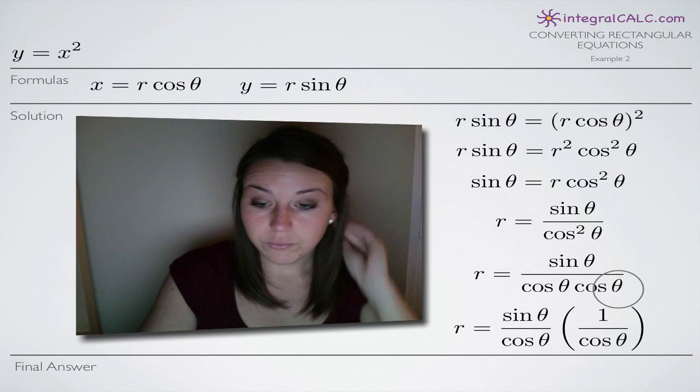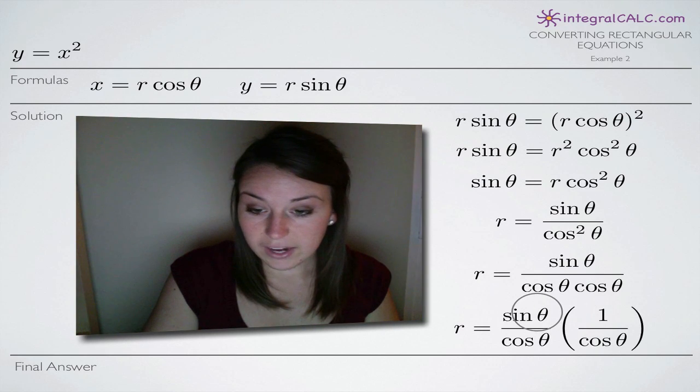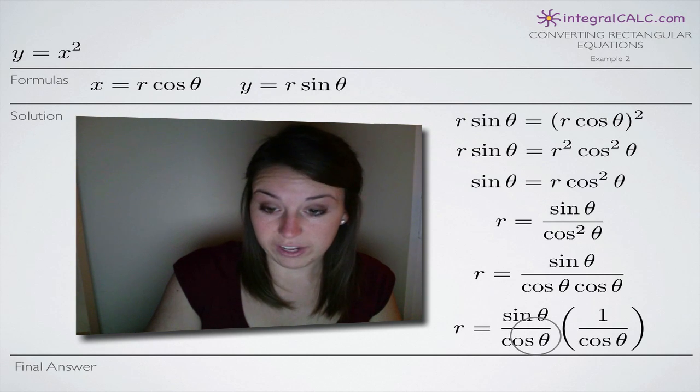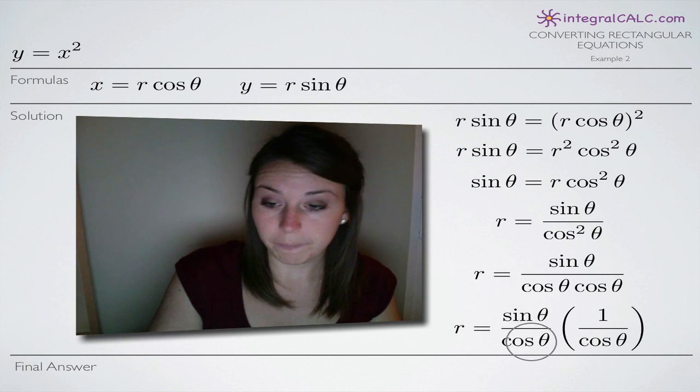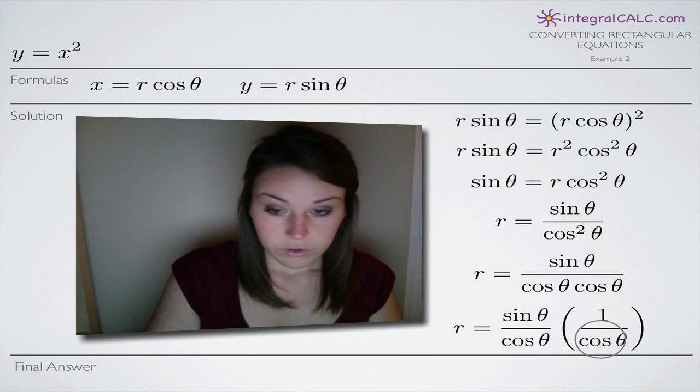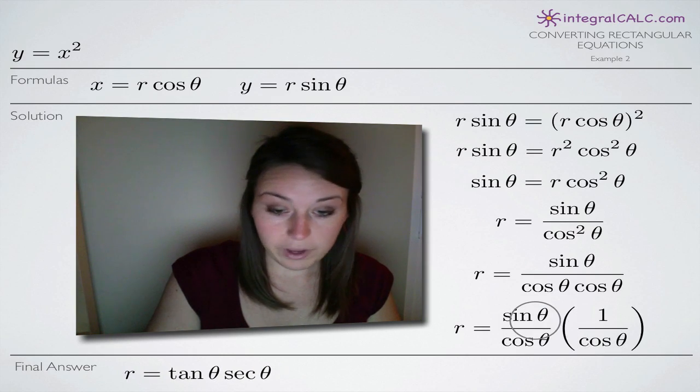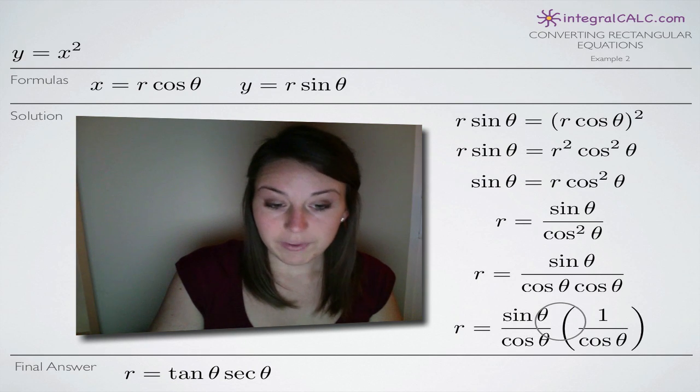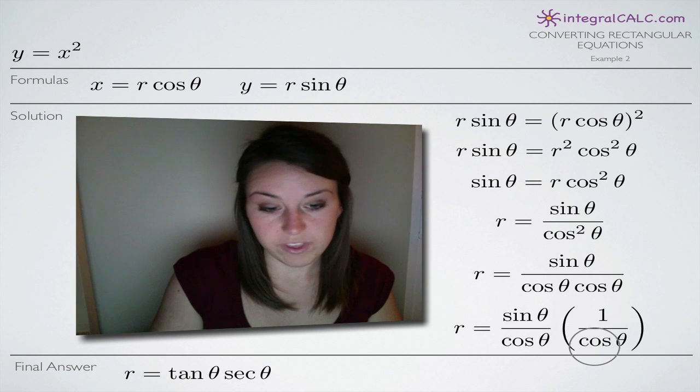So we've separated them like that and the reason we did that is because this sine of theta over cosine of theta is equal to tangent of theta. Sine over cosine is tangent and one over cosine of theta is the same thing as secant. So our final answer will be r equals tangent of theta times secant of theta.